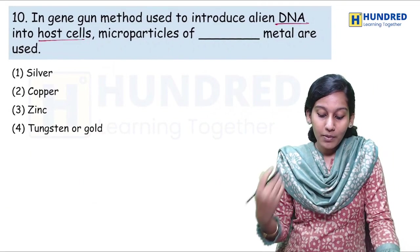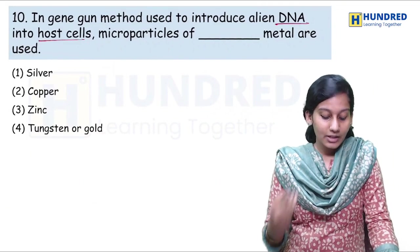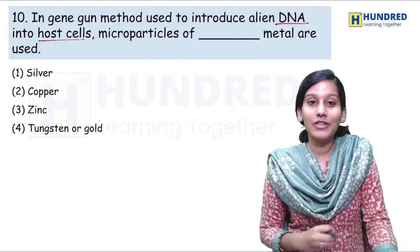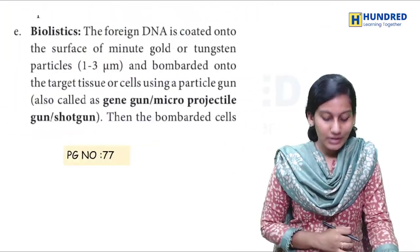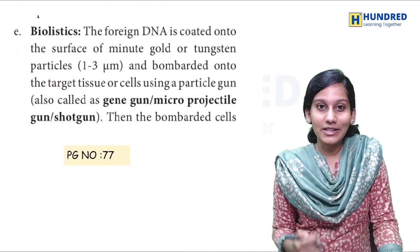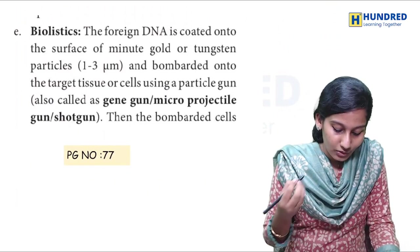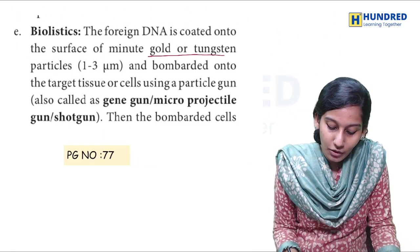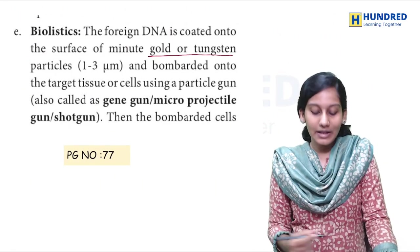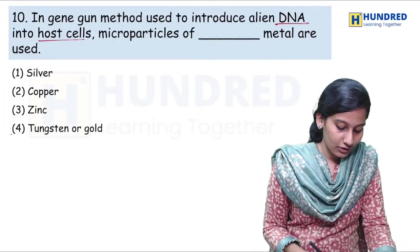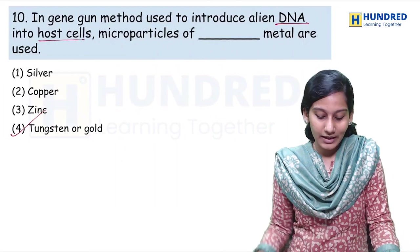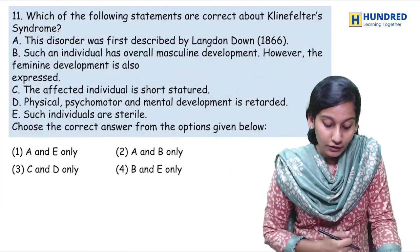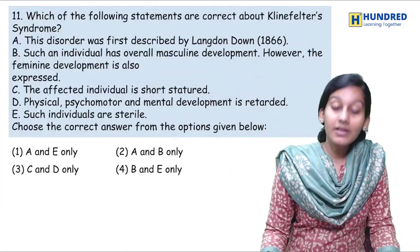Next question: in the gene gun method, which is used to introduce alien DNA into the host cell, microparticles of which metal are used? In the principles and process of biotechnology, they have given this method — biolistics, gene gun method — and it uses gold or tungsten particles. Yes, it is given — in the fourth option: tungsten or gold. Ten questions done.